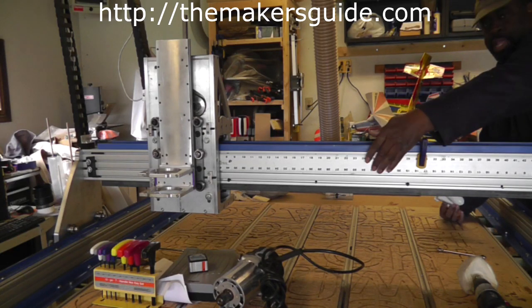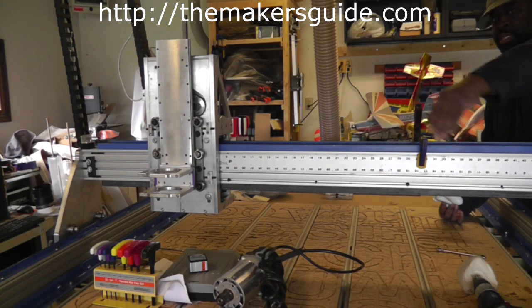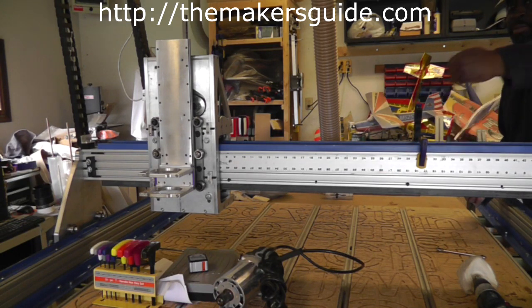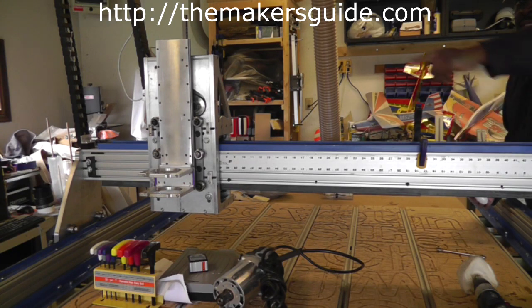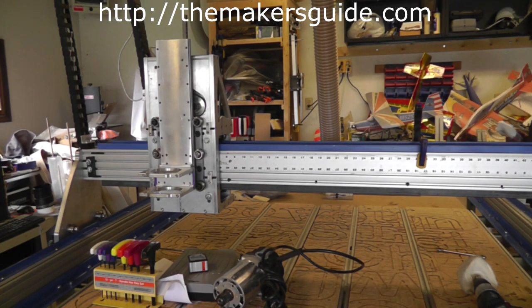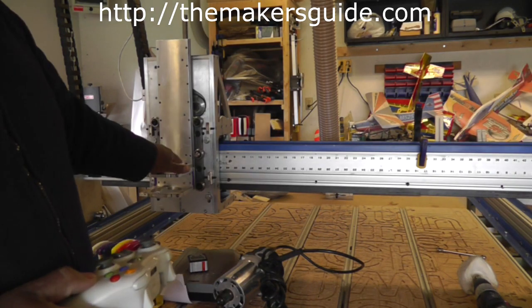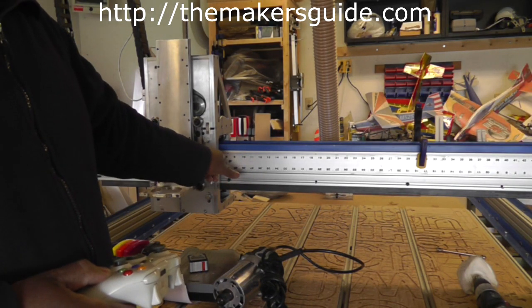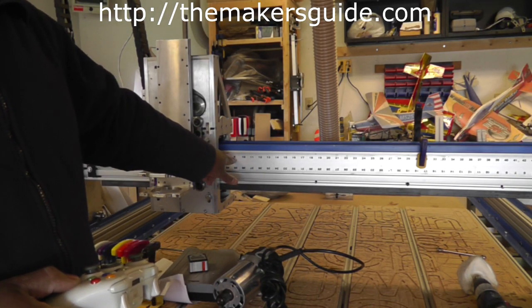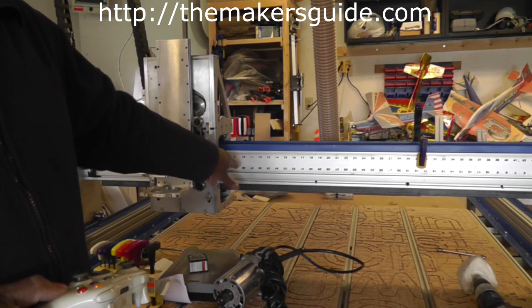I clamped a yardstick to the extrusion so that I can measure how far the carriages move when I give it a command. If I tell the carriage to move two inches, it should line up the edge with a nine when I'm done.